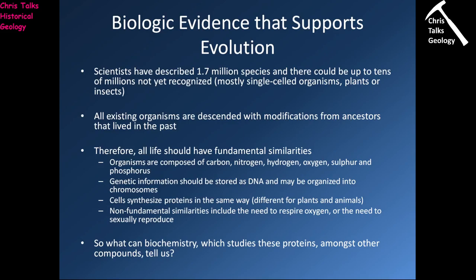There are also similarities in the way that cells synthesise proteins. Obviously this is going to be different for animal cells and plant cells — plant cells have the capacity to produce their own nutrients whilst animal cells have to bring their nutrients in. But nevertheless there are going to be similarities in the way all plant cells operate and the way all animal cells operate. There are also going to be some non-fundamental similarities — shared by large numbers of animals but not all — such as the need for oxygen to respire or the need to sexually reproduce.